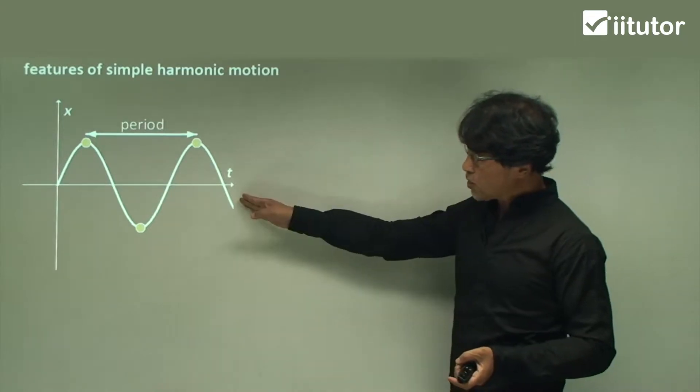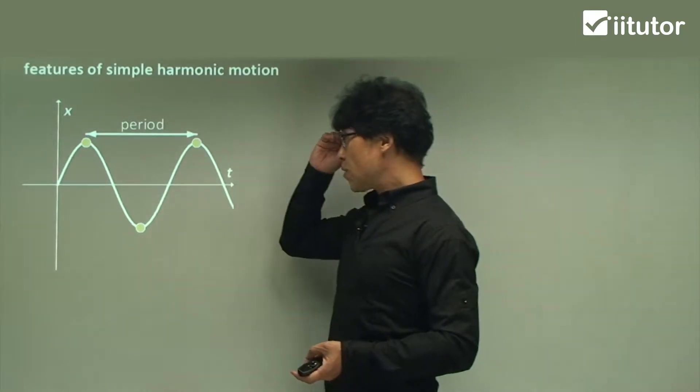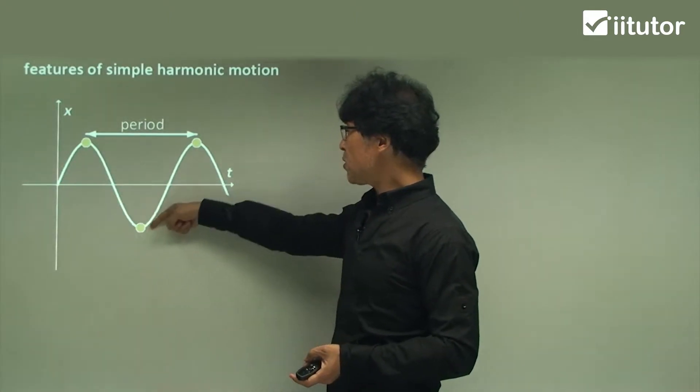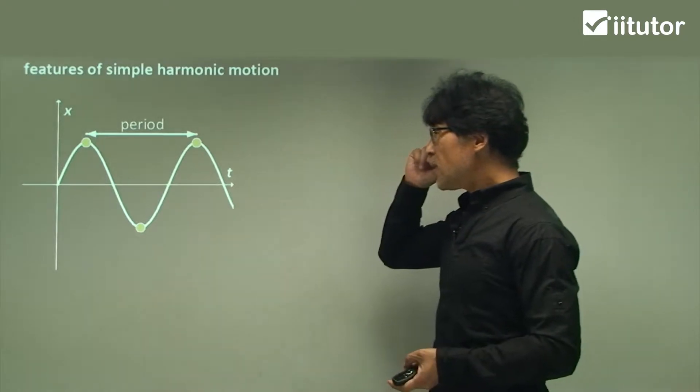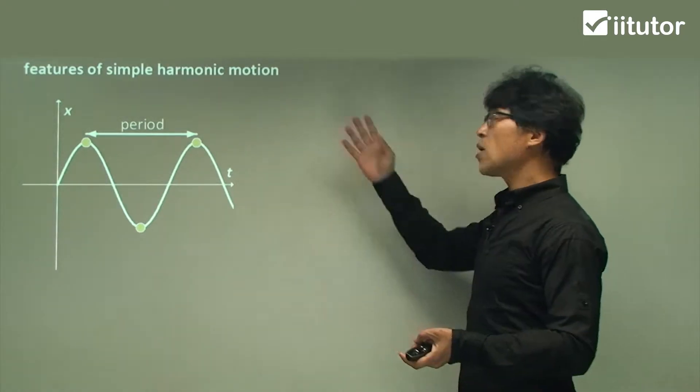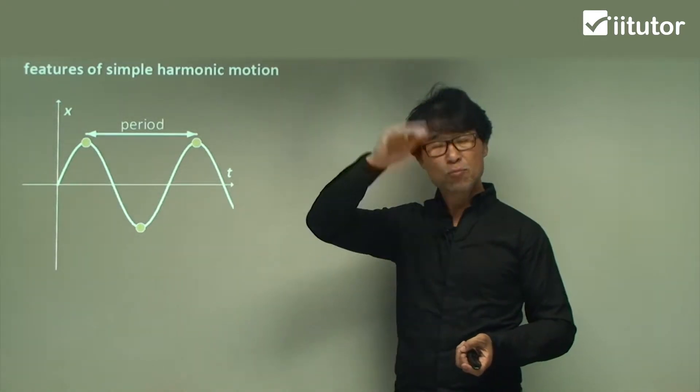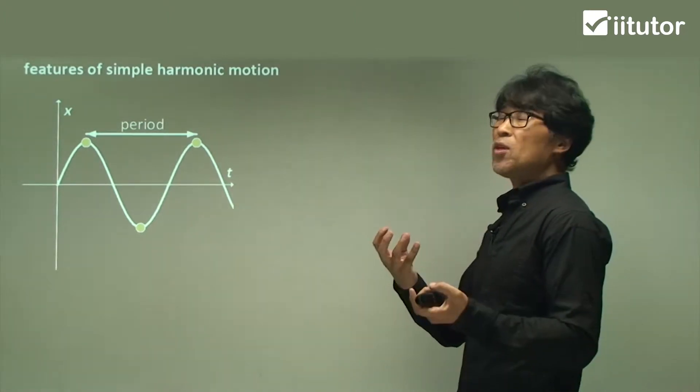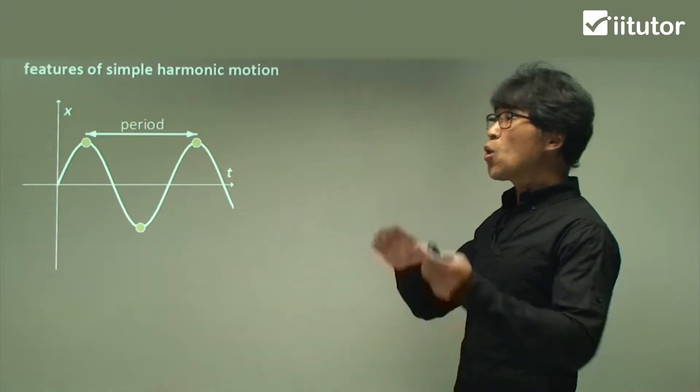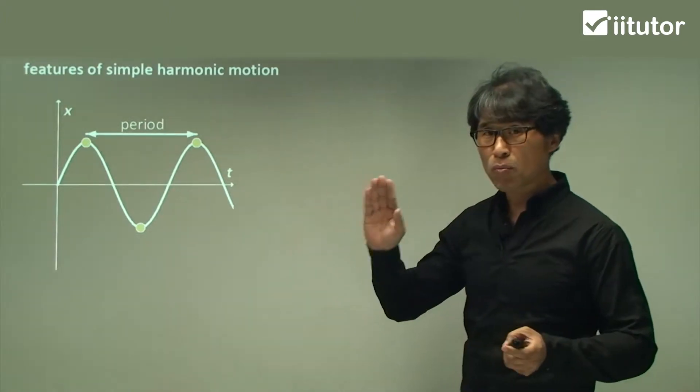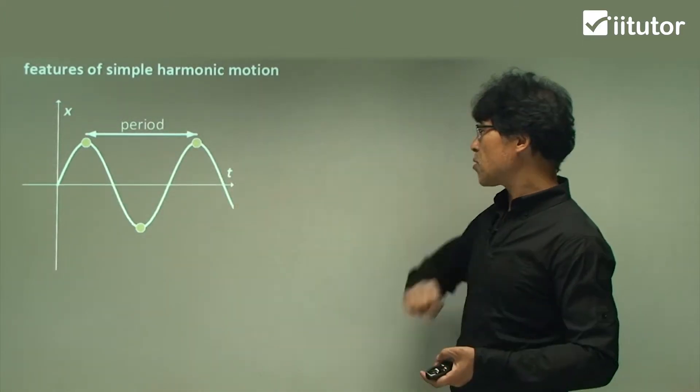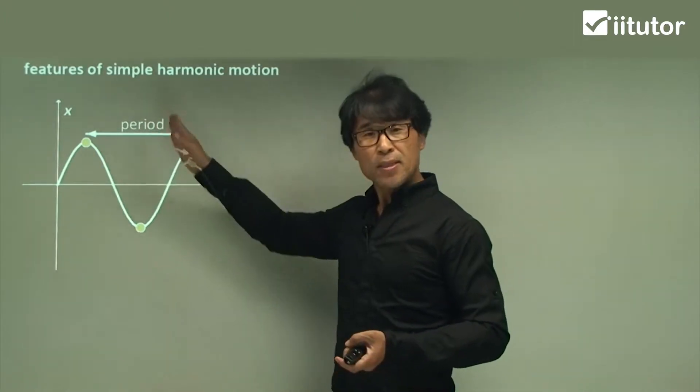For this diagram, this sketch tells us it moves up, it moves down, and it moves back up, it moves down again. A lot of people think simple harmonic motion is only up and down moving, but not really.